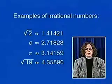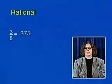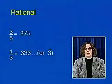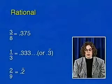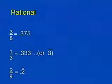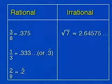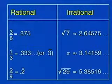Irrational numbers have decimal representations that do not repeat or terminate. For example, three-eighths equals 0.375, a terminating decimal, and one-third equals 0.333... — a repeating decimal — both rational. Two-ninths is 0.2 repeating. By contrast, the square root of seven, pi, and the square root of 29 show no pattern and do not terminate — they are irrational. The set of real numbers consists of all rational and irrational numbers.